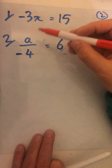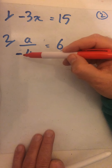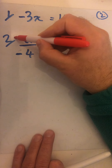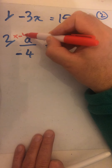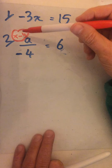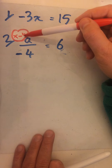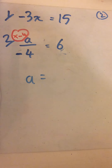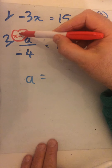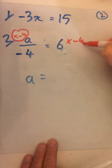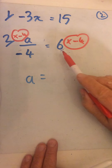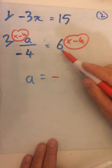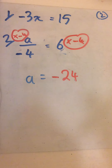Question 2: this is a negative 4, so I have to multiply by negative 4. Minus 4a divided by negative 4 gives me a — because a negative divided by a negative is positive. On the other side, 6 times minus 4 gives a negative number: 24. So a equals minus 24.